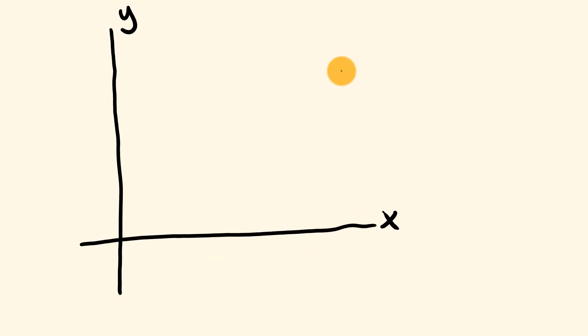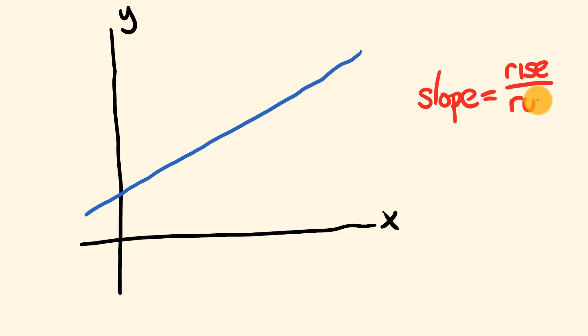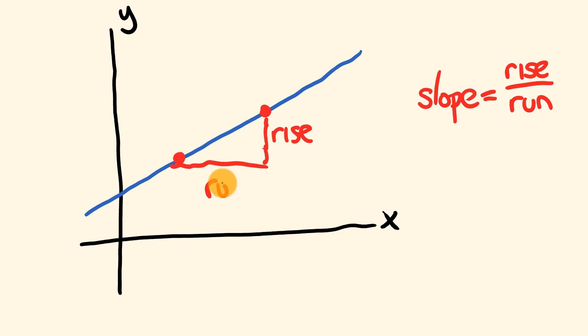I'll start with a nice simple graph. We have an x and y axis and a nice linear graph — a straight line going up. We want to describe the slope: how much it's moving up for how long it goes across. The slope is easily described in a linear graph as the rise over the run. You get two different points, you say how much it's risen — the rise — and how much it's run — the run — divide one by the other and you get your slope. For a linear graph, it goes up a regular amount.